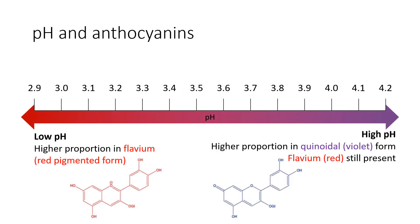pH can affect our anthocyanin expression. At lower pH, the majority of anthocyanins expressing color are in the flavium form, which is a red-pigmented form. At higher pH, it goes into a quinodial form, which is sort of a violet-blue color. That red pigment is still present — it's just that we have an increasing proportion of this other colored anthocyanin. I like to do this little visual diagram here illustrating the color changes that we can see.